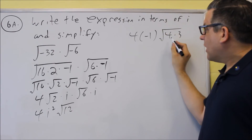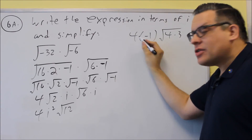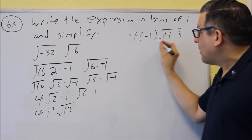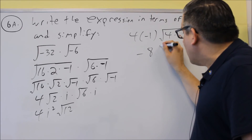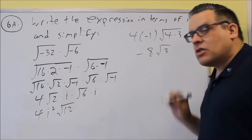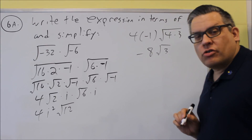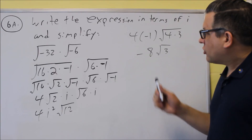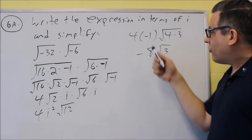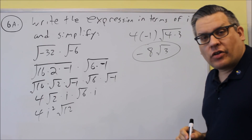So now I have 4 times negative 1, and I'm going to split up the 12 into 4 times 3. The square root of 4 is 2, and that 2 comes outside and multiplies by the numbers I already have. Taking the 2 out, I'll have 4 times negative 1 times 2, which equals negative 8. So I get negative 8 times square root of 3, and that's as far as you can go. All they wanted was to write the expression in terms of i, simplify, and the final answer is negative 8 square root of 3.